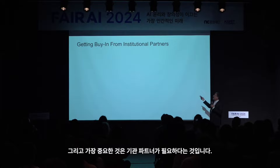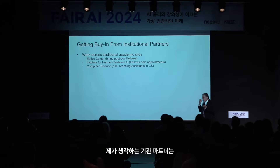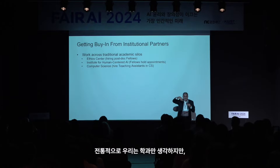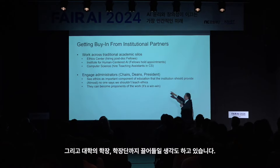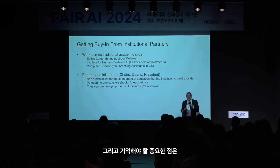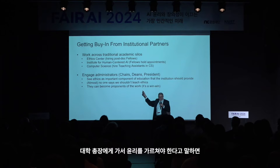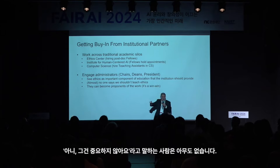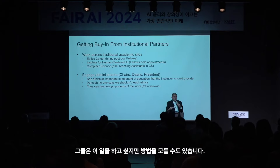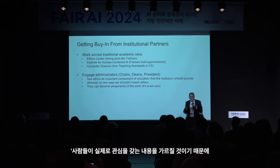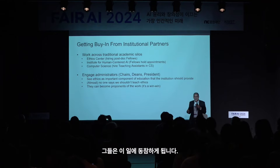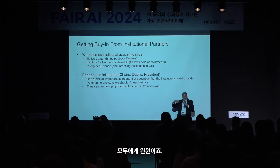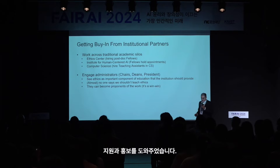Perhaps most importantly, you need institutional partners—working across different academic silos. Getting different departments, units, and institutes to work together, and bringing in chairs, deans, and university presidents all the way up has made a big difference for us. The important thing to remember is no one wants to say we shouldn't teach ethics. If you go to the president of your university and say we should teach ethics, they don't say no. They want to do this; they just may not know how. If you come with a game plan—we're going to teach the things people care about, but we need your help—they get on board. It's a win-win, and all the way up to our university president, we've had support and help publicizing the work.